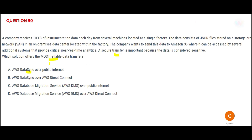My problem with option A is that DataSync would do this over the public internet, and since the data is considered sensitive, I would not use the public internet. That is why this option is wrong — I will mark it incorrect. Let us now scan options C and D.